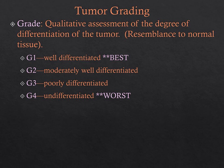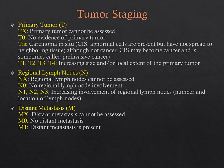Tumor grading won't be tested, but it's good to know: G1 is well-differentiated, resembles normal tissue, reproduces more slowly, and has a more favorable prognosis, whereas undifferentiated is worse. Tumor staging determines the size of the tumor and the existence of metastasis — again, not tested, but nice to know if you ever want to work in oncology.